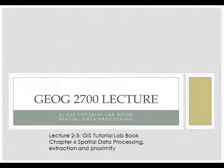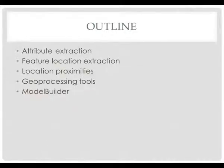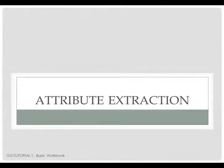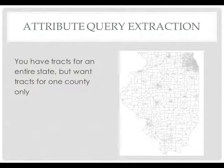This section relates to the GIS tutorial lab book chapter six, which deals with spatial data processing. With each of the units we have lecture material that deals with the textbook concepts and broader concepts, and then lecture material that deals directly with issues in the tutorial manual. We'll talk about attribute extraction, feature location extraction, location proximities, and later files will deal with geoprocessing tools and model builder.